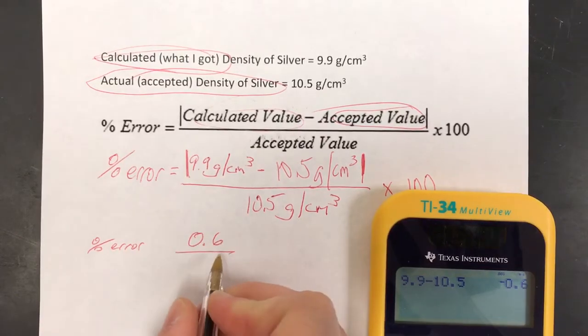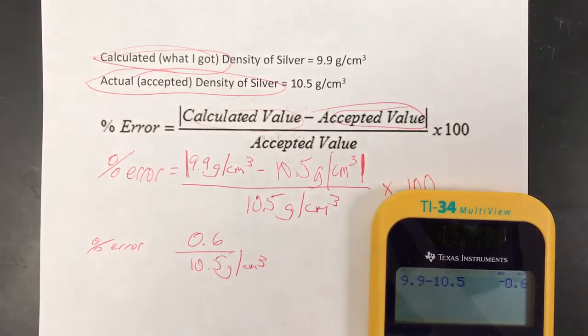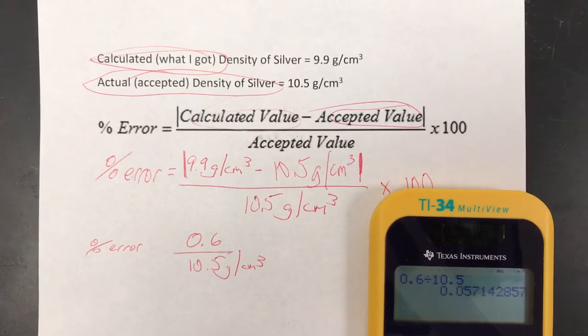I divide that whole thing by my accepted value which is 10.5 grams per centimeter cubed. So I do 0.6 divided by 10.5 and I get 0.057.